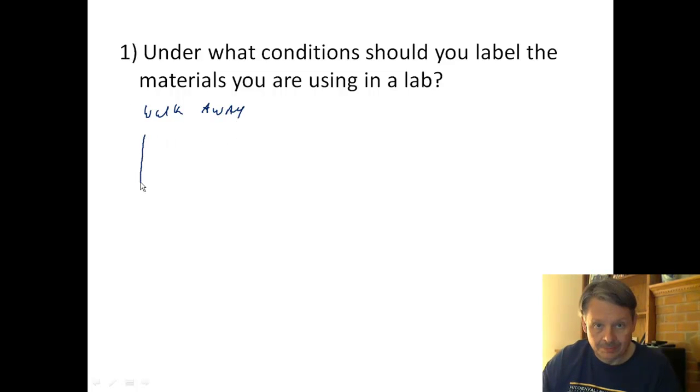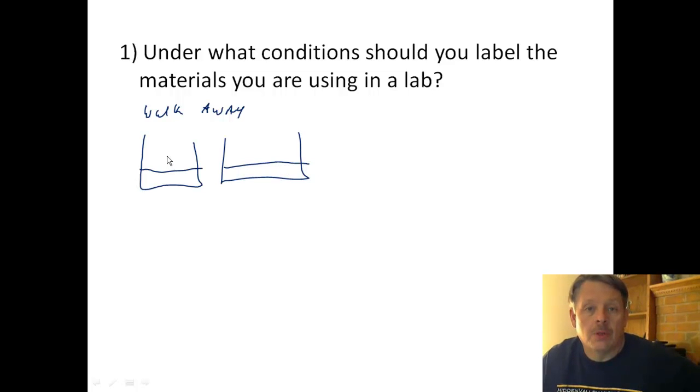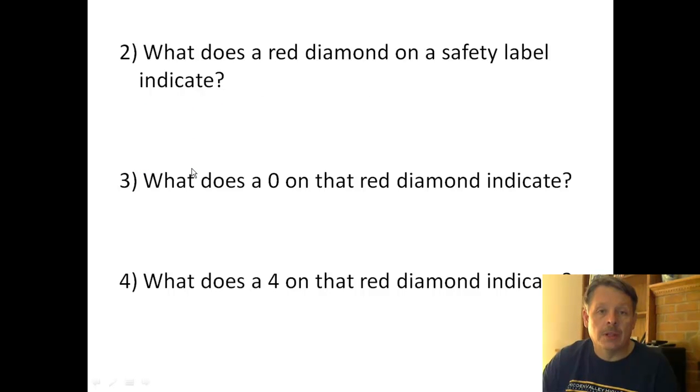Another reason is if you have two beakers of liquid. A lot of times you can't tell the difference between one liquid and another—they're both clear, for example, which is very common. So you might have an acid in one and a base in the other, and you can't tell which is which. You should label anything where there's any question of what the material is, in case you might ever forget. So those are examples of why you might label something.